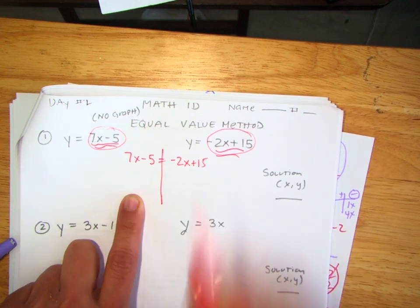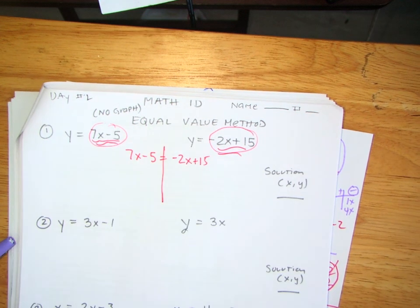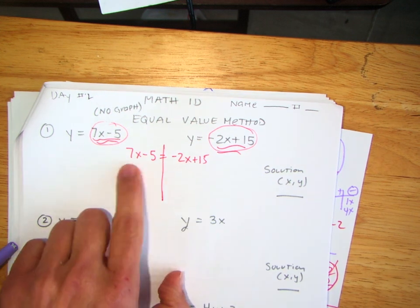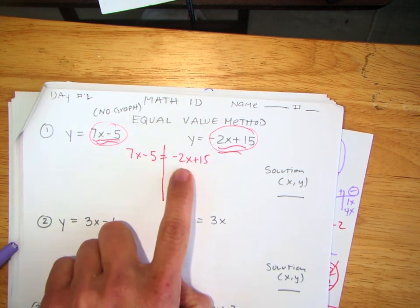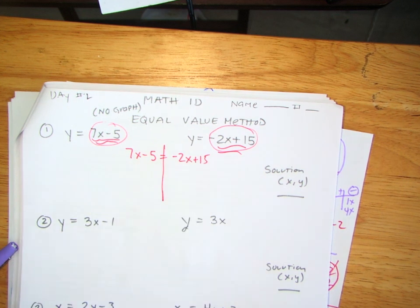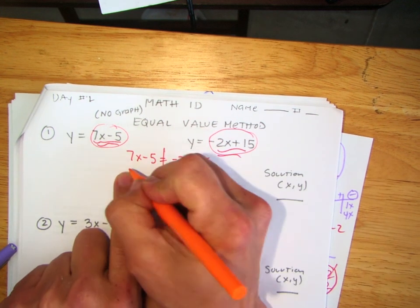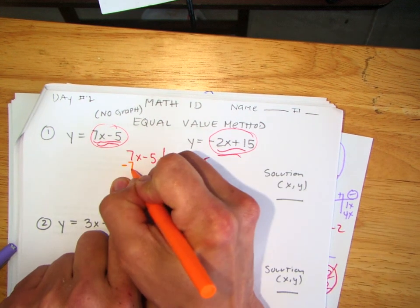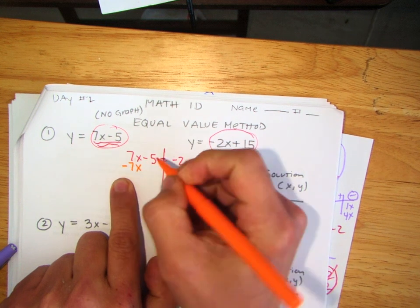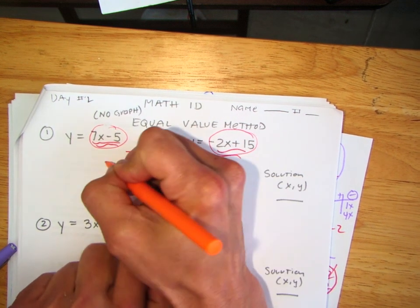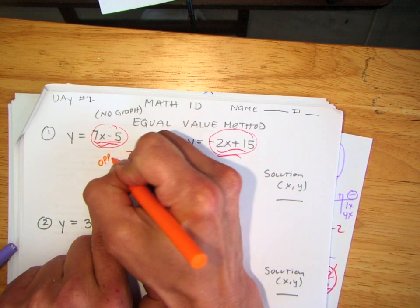I'm going to draw the line. I'm actually looking for x. I can't add these two together or the same on the other side, so I'm going to do what's called opposites, which is zero pairs. I'm going to go ahead and pick negative 7x. I like doing the variables first, the terms with the variables. So negative 7x on both sides.